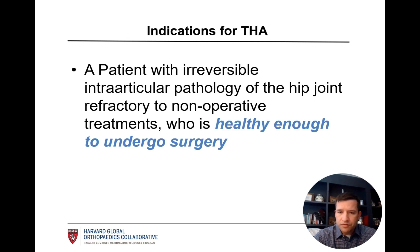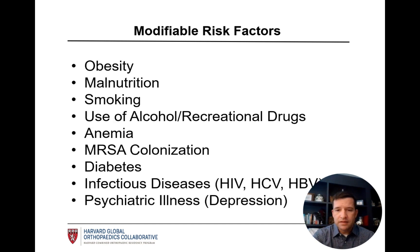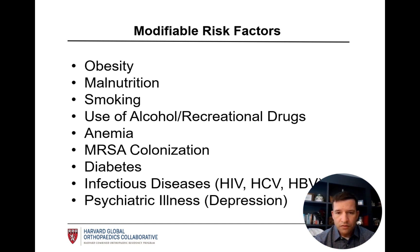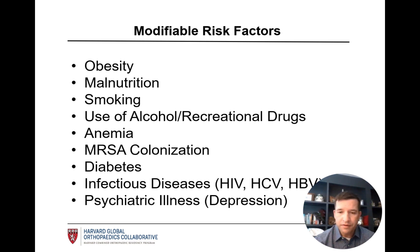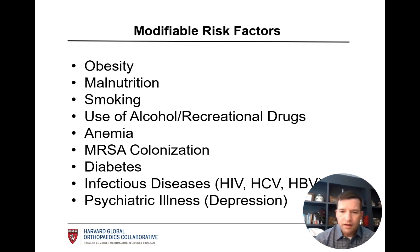Prior to surgery, we absolutely need to assess the patient's overall health status and make sure that they are an appropriate candidate for surgery. Sometimes this leads to identification of various modifiable risk factors, and it is generally our obligation to put these patients in the best possible situation to have a successful elective surgical procedure. Some of these risk factors — malnutrition, smoking, diabetes, and colonization with MRSA — can all be addressed preoperatively. We may not completely eliminate these medical comorbidities, but we can ensure appropriate treatment and control at the time of surgery to optimize our postoperative outcomes.